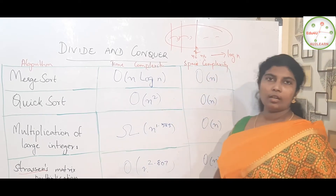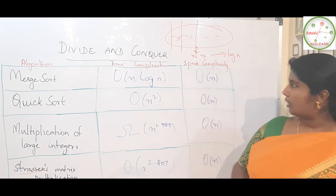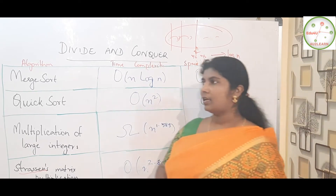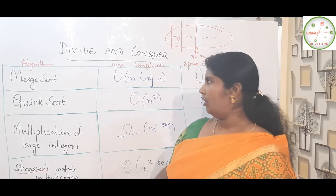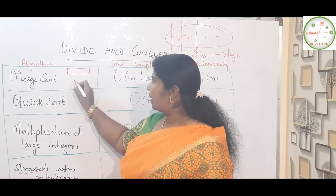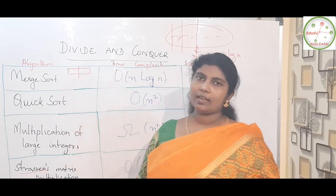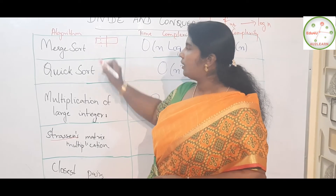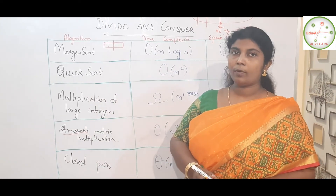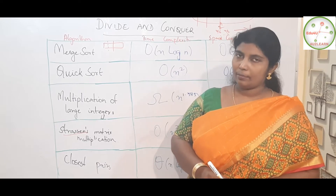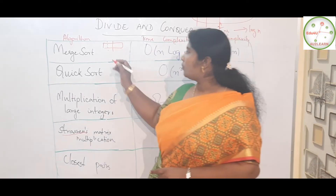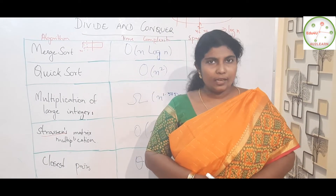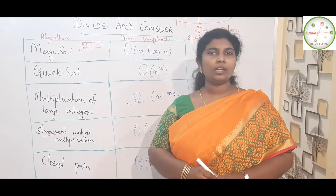With that idea, let us get into the algorithm — merge sort. Merge sort takes an array with n elements. It is first divided into two halves, so n becomes n/2, and further divided into another two halves — n/4. This continues until the smallest unit, n equal to 1, is reached. Until n equals 1, the array is divided repeatedly.